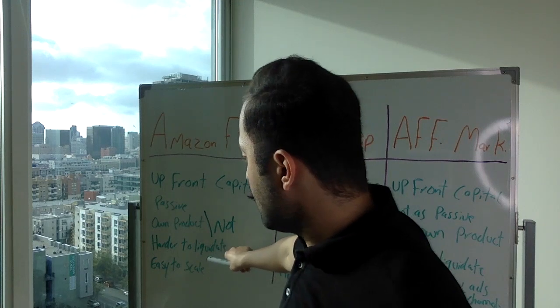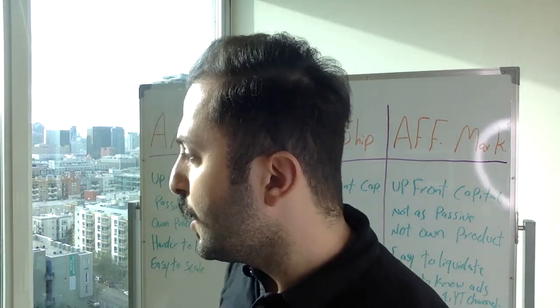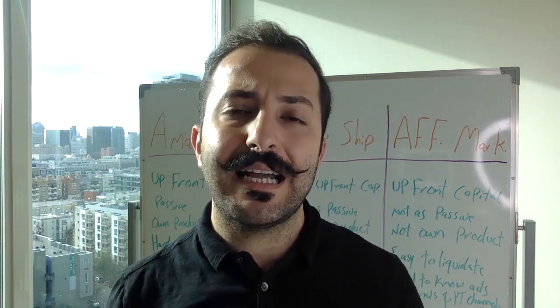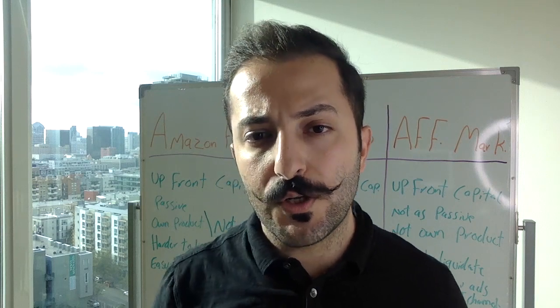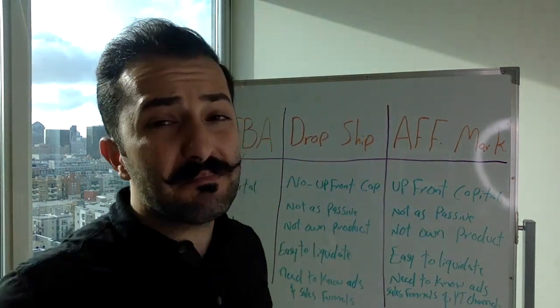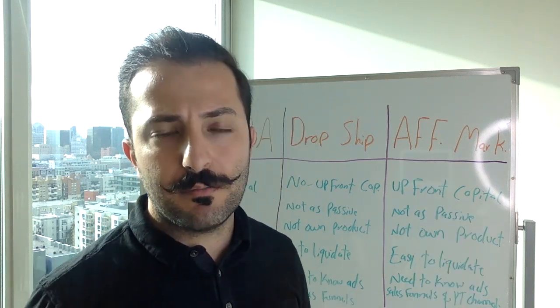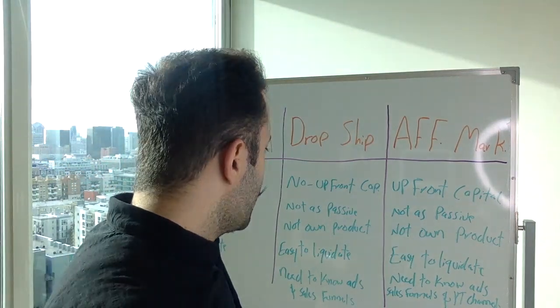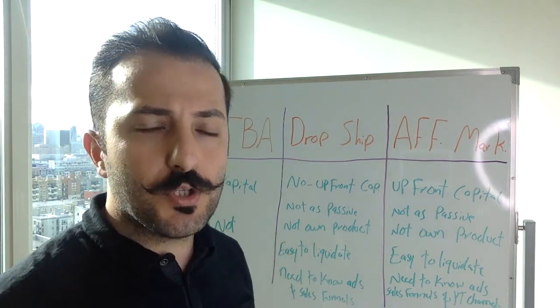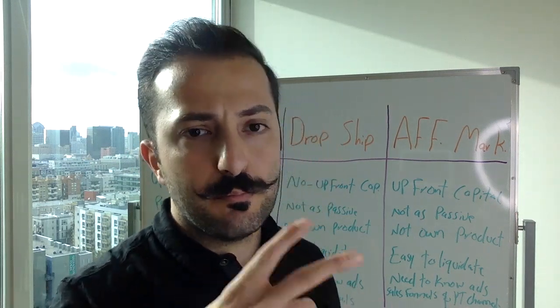The fourth point is how easy it is to liquidate if things don't work out. With private label, it's a little harder to liquidate. I suggest students buy no more than 200–300 units, but if the product just doesn't sell, it's harder to liquidate because you have inventory in stock. Dropshipping is easy to liquidate — you can swap out new inventory because you don't own it. Same with affiliate marketing: if it doesn't work out, just go find another product.